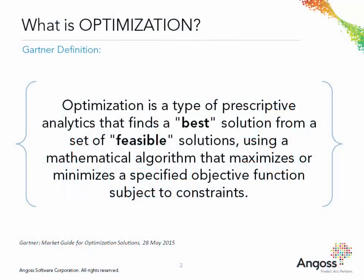Let's start with Gartner's definition of optimization. Optimization is a type of prescriptive analytics that finds a best solution from a set of feasible solutions using a mathematical algorithm that maximizes or minimizes a specified objective function subject to constraints. 'Best' is a value or KPI that is either maximized or minimized according to an objective. This could be as simple as a measure of profit or loss, but can be something more strategic or complex like the measure of risk.